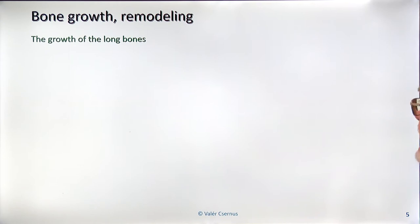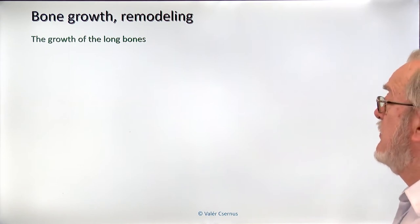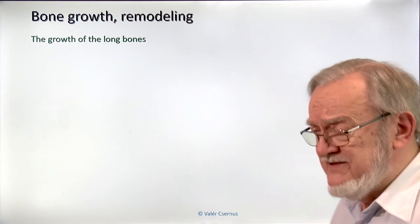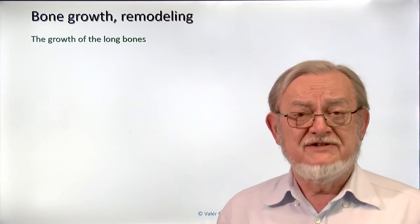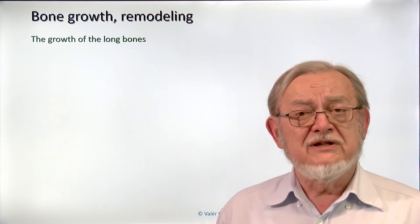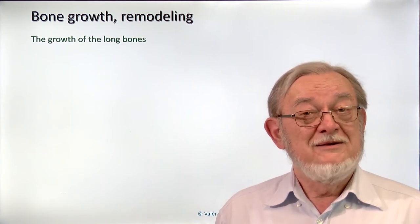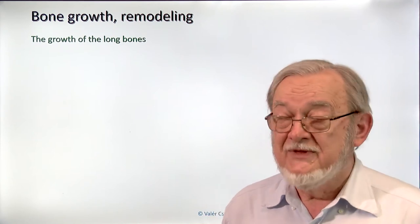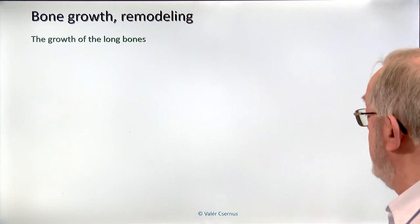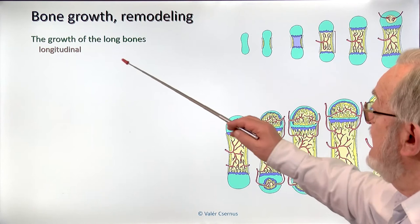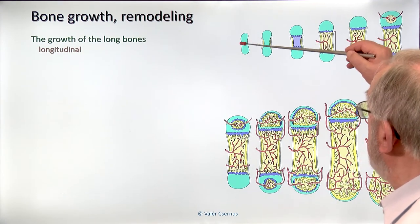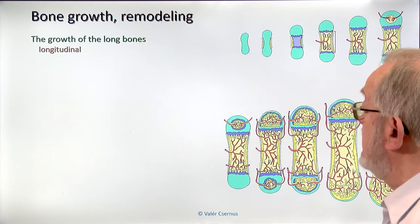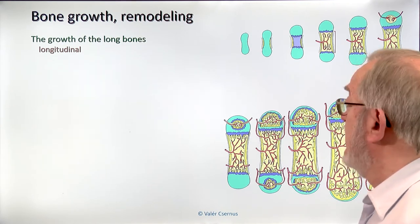Let's summarize: what are the factors that make long bones bigger — how do they grow? This is a question in both the first semester exam and the final exam. It has three factors: the bone grows longitudinally, the bone thickens, and finally the cavity inside — the medullary cavity — increases. Let's see how the longitudinal growth occurs.